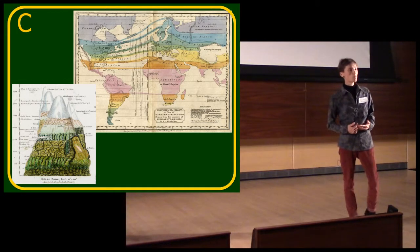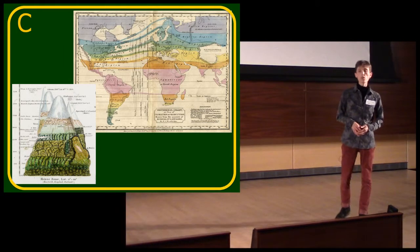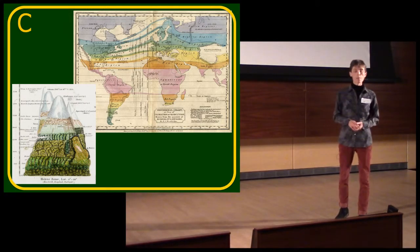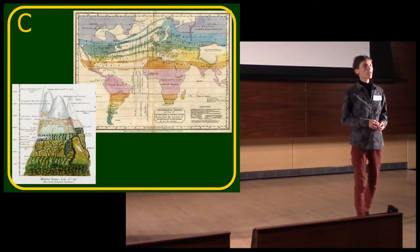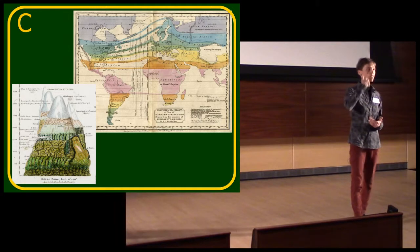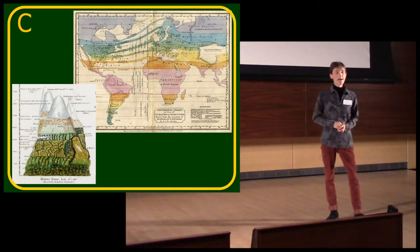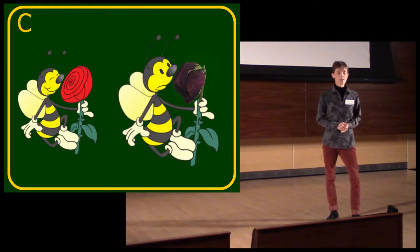And as the world warms, vegetation climate zones, those coloured bands you can see on the map behind me, they're shifting. They're shifting polewards, and they're shifting upwards in altitude. And trees just don't shift that fast.